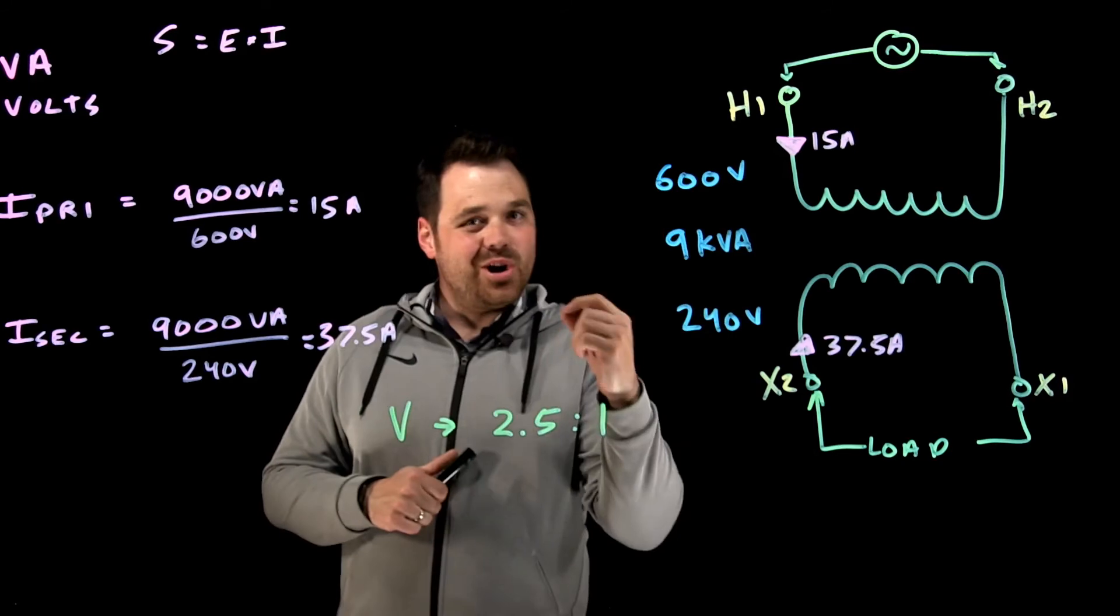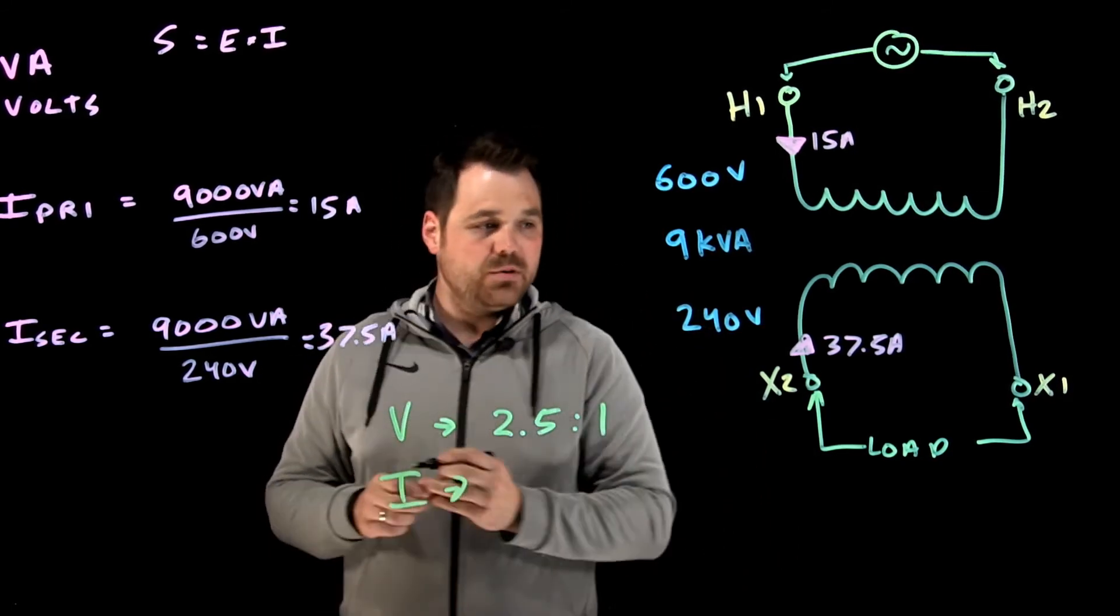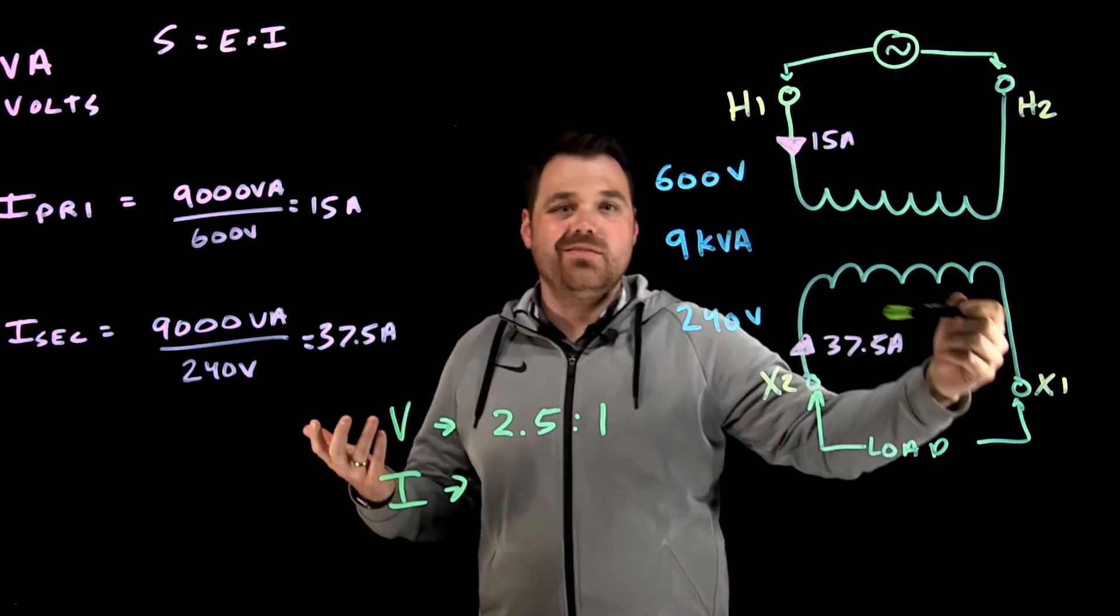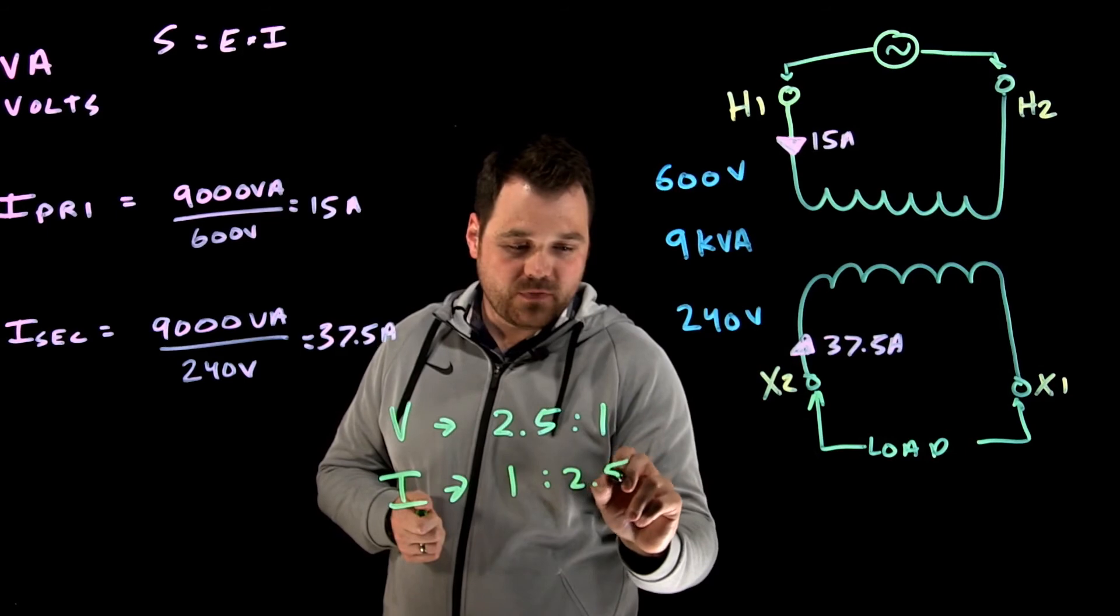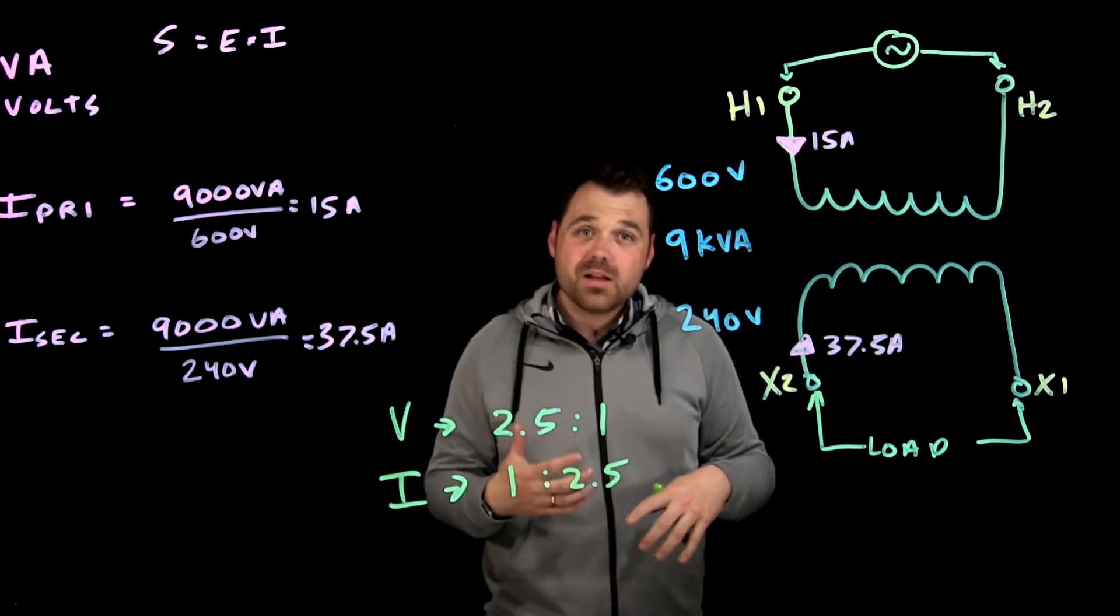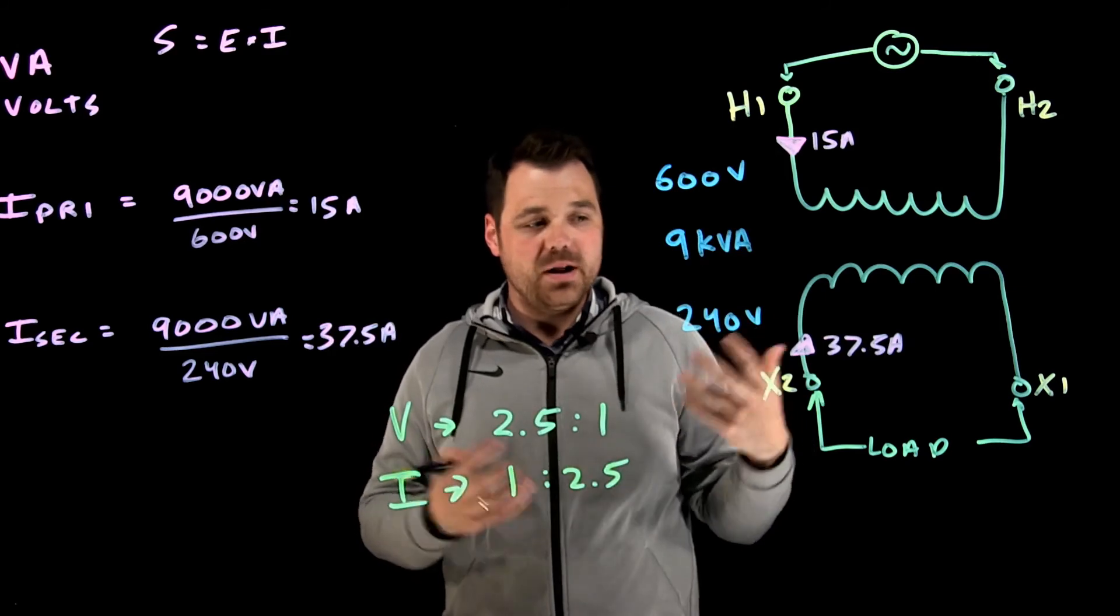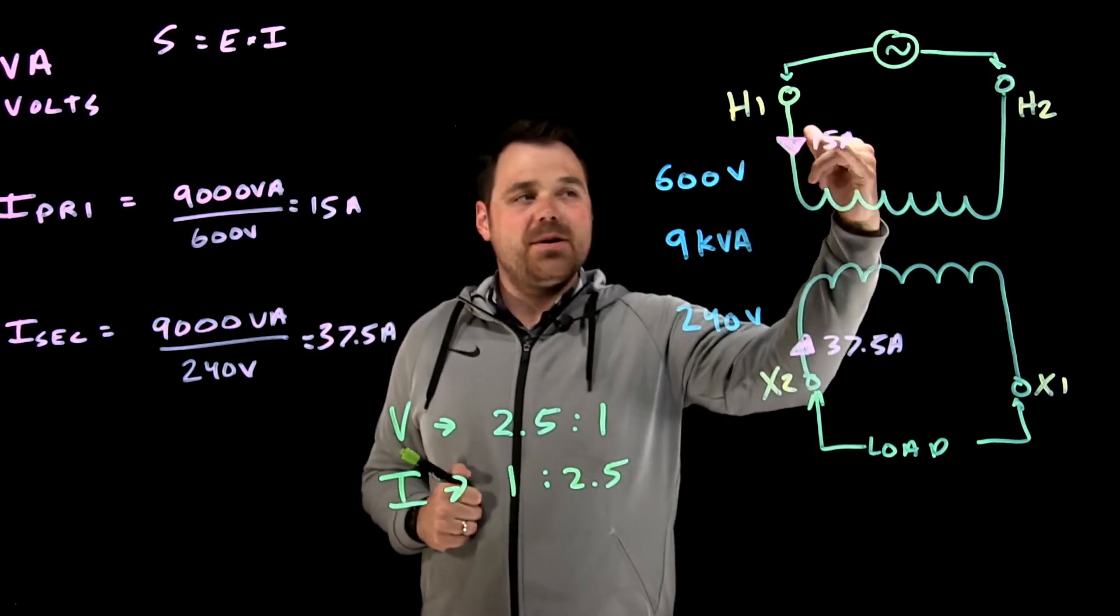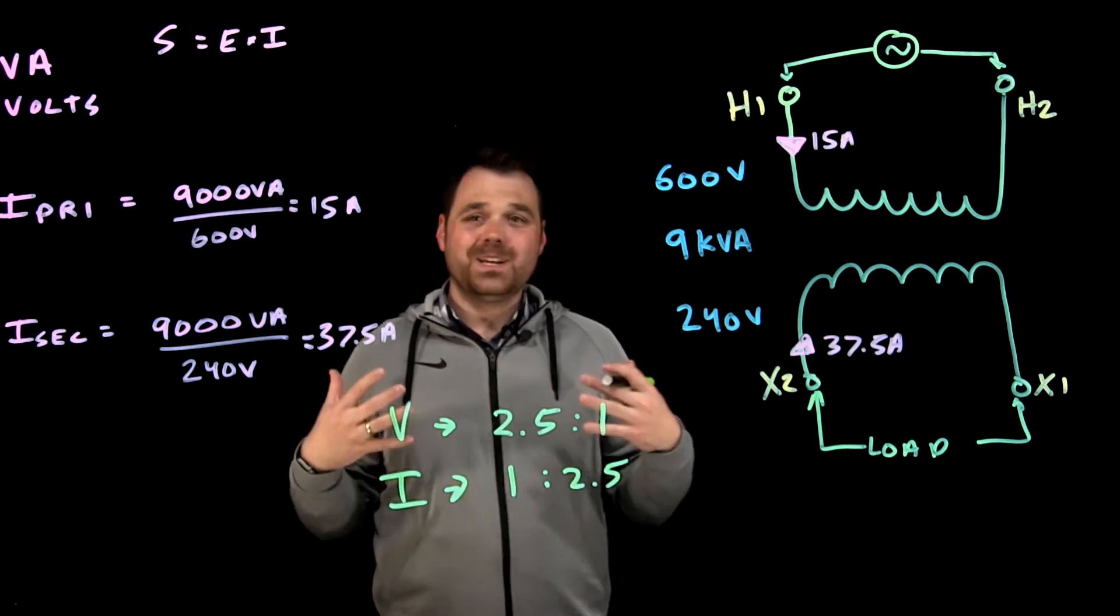My current ratio should always be the opposite of that. In this case, my current ratio, I would go 37.5 divided by 15 or 15 divided by 37.5, which gives me a 1 to 2.5 ratio. Those two ratios matching up like that, we discussed in another video. But you'll see your current and voltage ratios are actually opposite. When I go 37.5 times 240, I get my 9,000 VA. Same up here. 15 amps times 600 volts gives me my 9,000 VA.